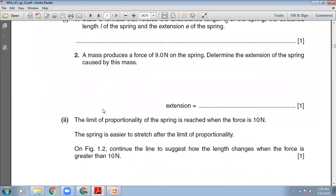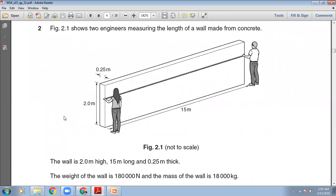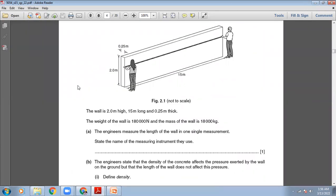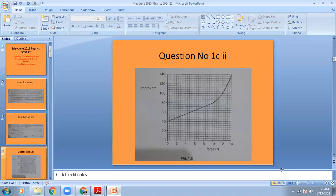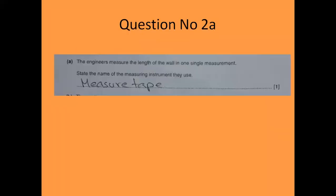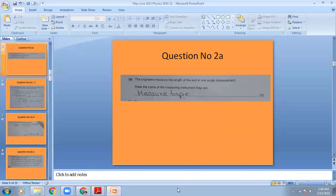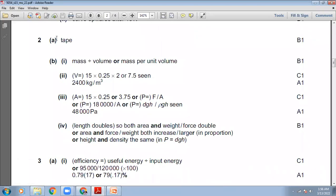Figure 2.1 shows two engineers measuring the length of a wall made from concrete. The wall is 2 meters high, 15 meters long, and 0.25 meters thick. The weight of the wall is 180,000 Newton and the mass is 18,000 kg. The engineers measure the length of the wall in one single measurement. State the name of the measuring instrument they use. The measuring instrument that can measure 15 meters is a measuring tape. Marking scheme answer: tape.